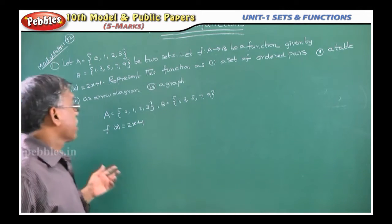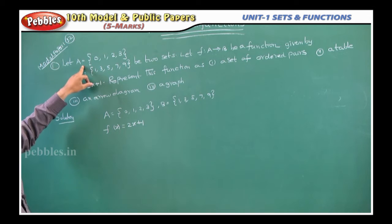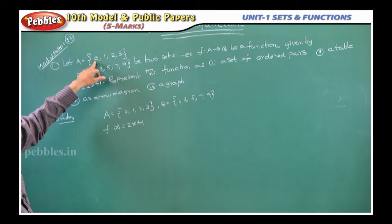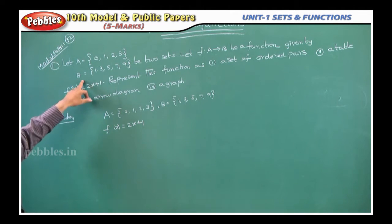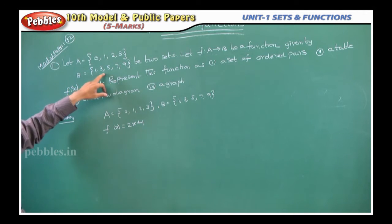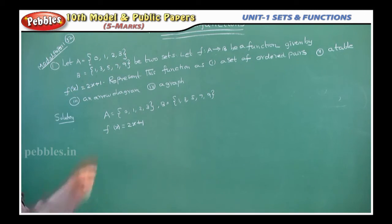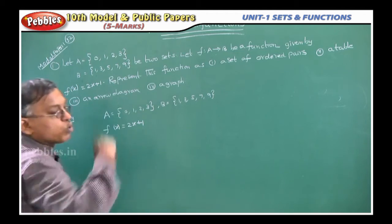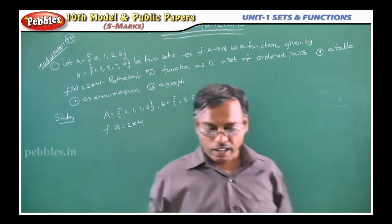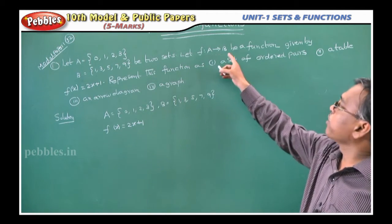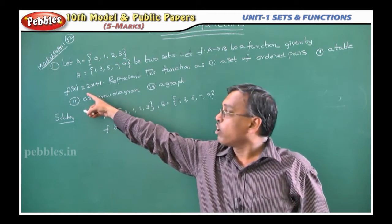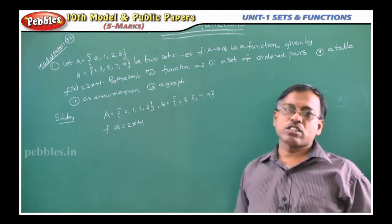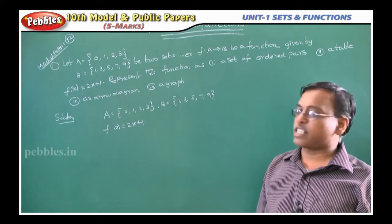First sum, listen carefully. Let A be the set containing the elements 0, 1, 2, 3, and B be another set containing the elements 1, 3, 5, 7, 9. They are defining a function f from A to B given by the rule f(x) = 2x + 1.